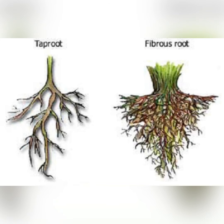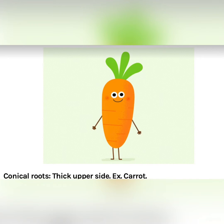A tap root is the main root that grows from the base of the stem — it is broad at the top and narrow at the bottom, with smaller lateral roots growing from the main root. In fibrous roots, there is no main root; instead, there are numerous thin, hair-like roots that grow from the base of the stem. Plants such as grass, maize, wheat, and rice have fibrous roots.